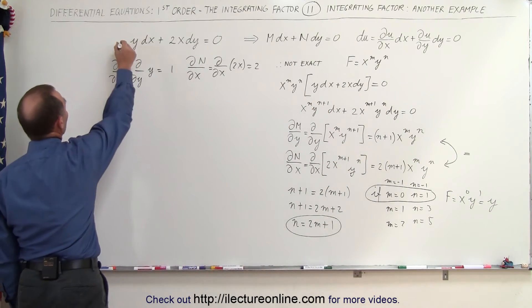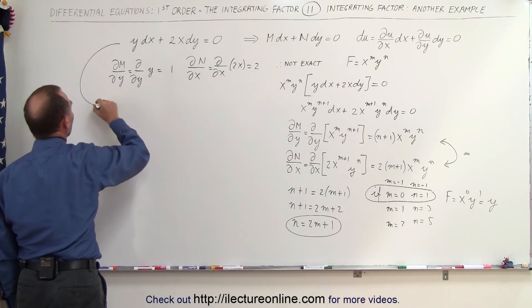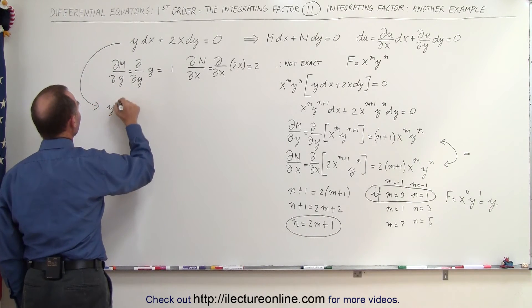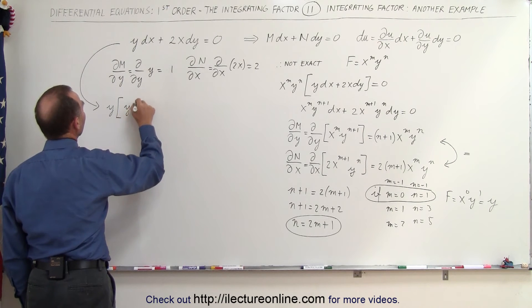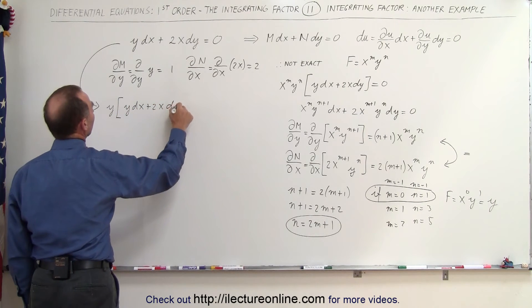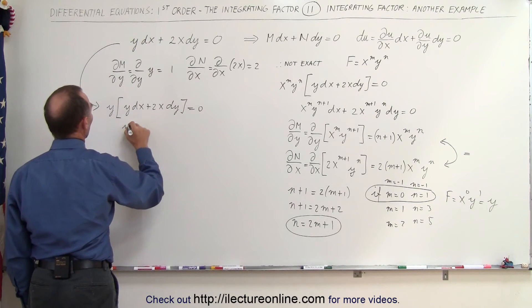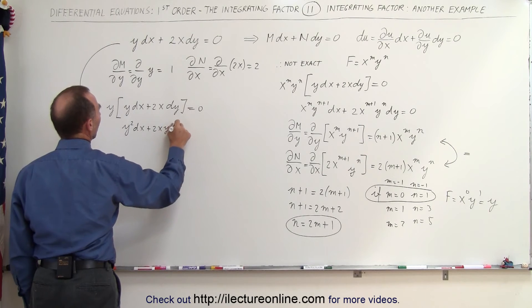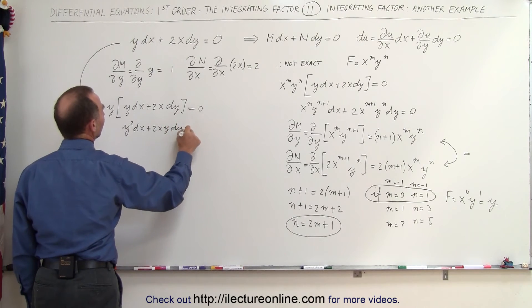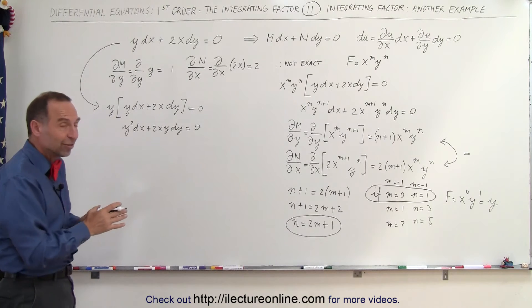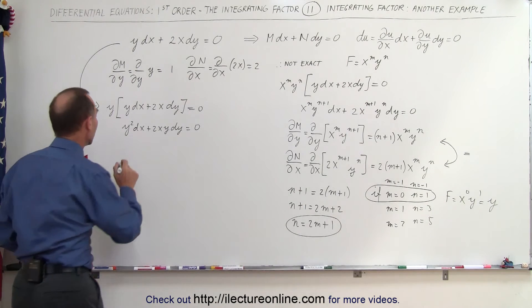So we multiply both sides of the original equation by the integrating factor y. This gives y · (y dx + 2x dy) = 0, which becomes y² dx + 2xy dy = 0. Let's verify that this is now an exact equation.